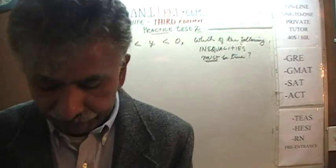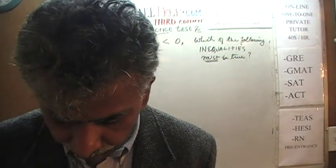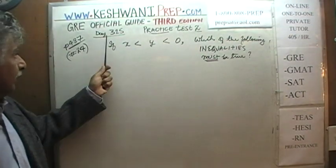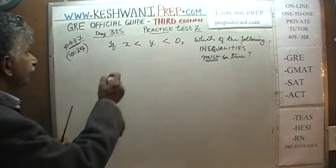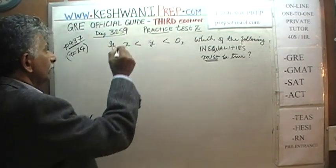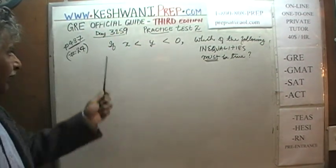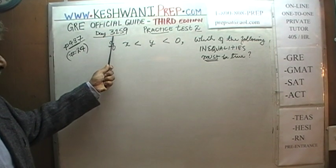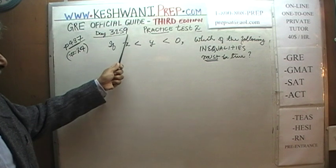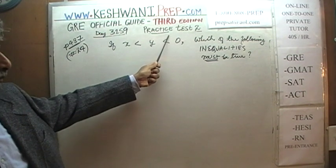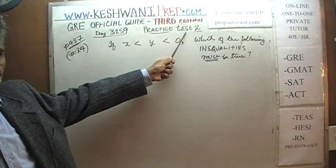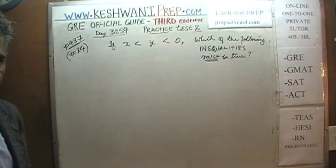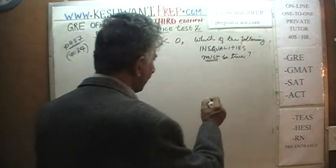Today is our lesson number 159 — day 3159 — the '3' signifying that we are in the third edition. We are in the process of solving a problem from practice test number 2, found at the very end of the book on page 487. Problem number 24 is what we are about to do — the penultimate problem.